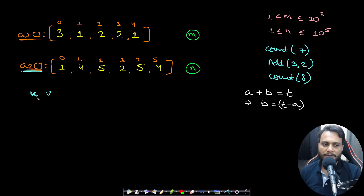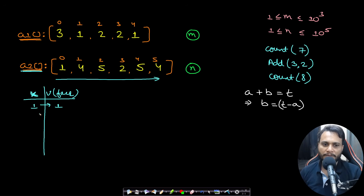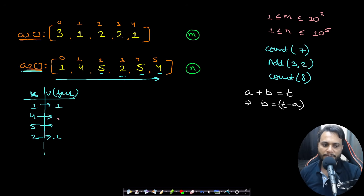We build a hash map from array two using key-value pairs where the key is the element value and the value is its frequency. Parsing through array two: 1 appears once, 4 appears once, 5 appears once, then 2 appears once, then 5 becomes frequency two, then 4 becomes frequency two. This is our frequency hash map.